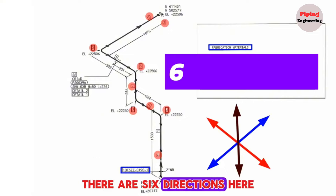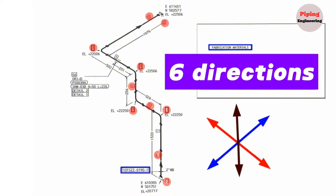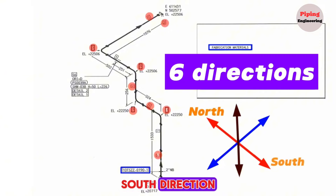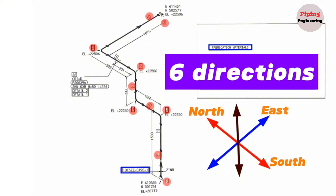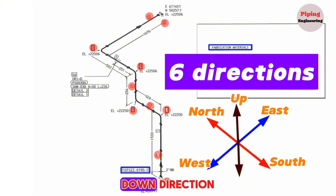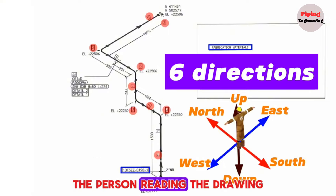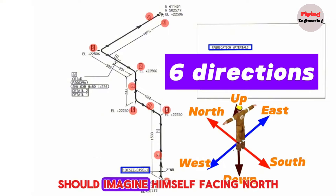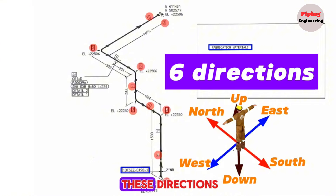There are six directions shown here: North, South, East, West, Up, and Down. The person reading the drawing should imagine themselves facing north, positioned at the center of these directions.